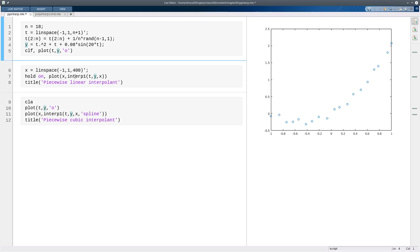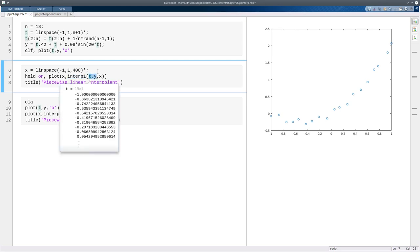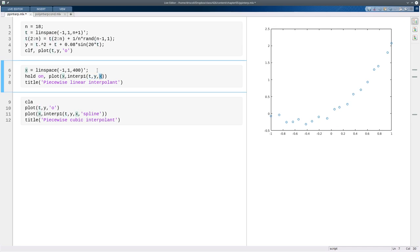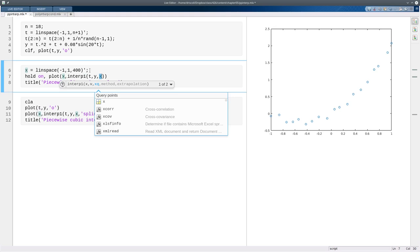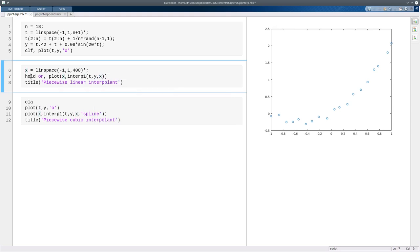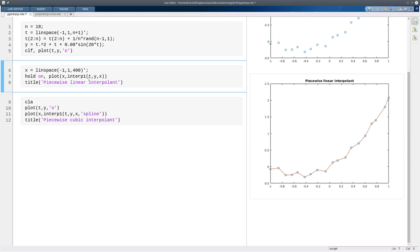So the function for doing interpolation in MATLAB is called interp1, and it takes at least three arguments. The first two arguments define the nodes and the data. The third argument is the values of x that you want to evaluate the interpolant at. So if we do that, the default choice is a piecewise linear interpolant, so it just connects the dots.